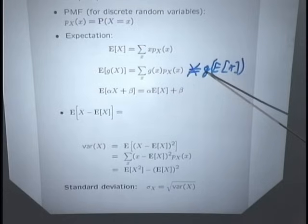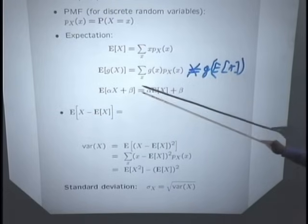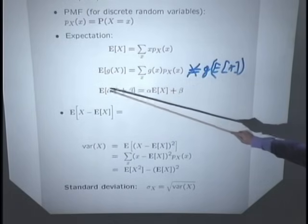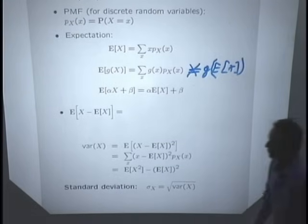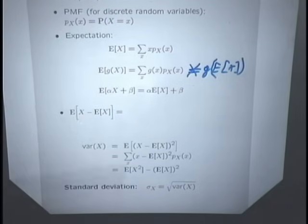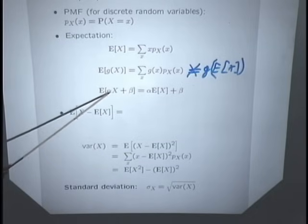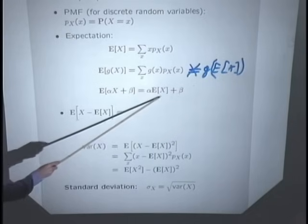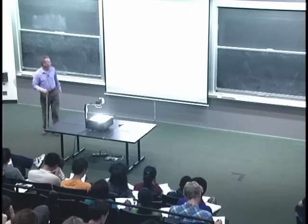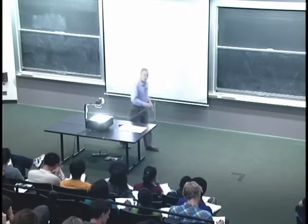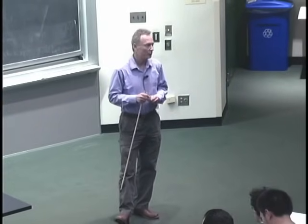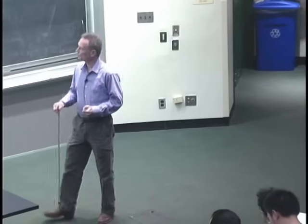There is an exception: when g is a linear function, the expected value of a linear function equals that same linear function of the expectation. For example, if X is degrees Celsius and alpha*X + b is degrees Fahrenheit, you can first convert to Fahrenheit then average, or find the average in Celsius then convert — either is valid. The expected value tells us where the center of the distribution is, specifically the center of mass of the PMF when plotted as a bar graph.